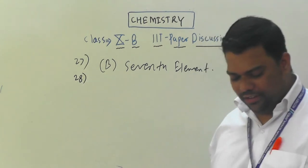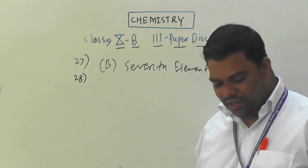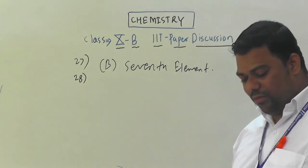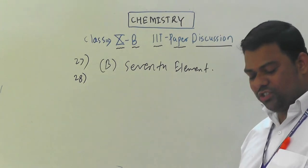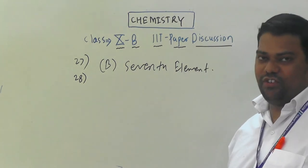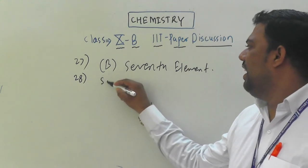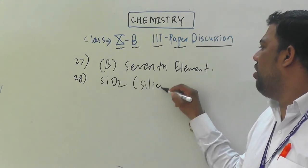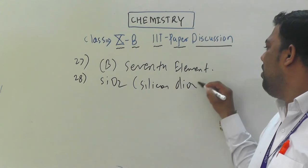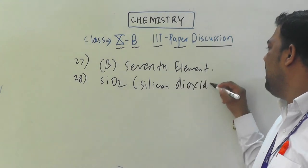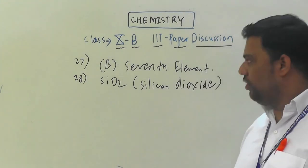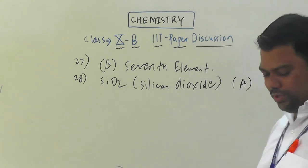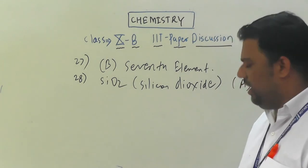Question number 28: considering Mendeleev's periodic table, what will be the formula of an oxide of silicon? The answer is simply SiO₂ — silicon dioxide. So the option is small A.